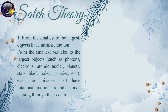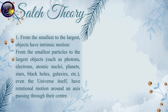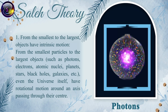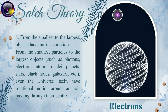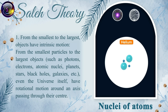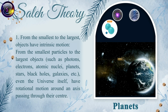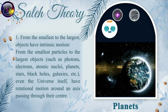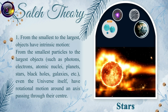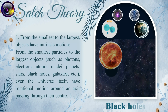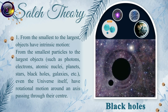Principle 1: From the smallest to the largest, objects have intrinsic motion. From the smallest particles to the largest objects — such as photons, electrons, atomic nuclei, planets, stars, black holes, galaxies, and even the universe itself — all have rotational motion around an axis passing through their center.